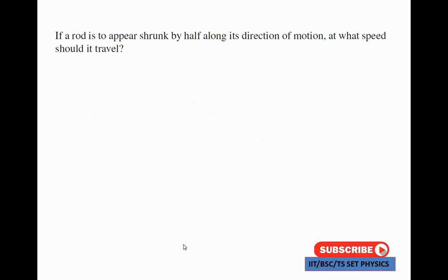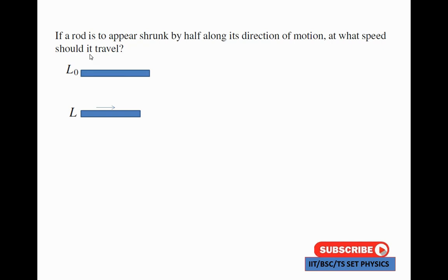The next important problem: if a rod is to appear shortened to half its length along its direction of motion, at what speed should it travel? The rest length is L-naught and the contracted length is L. The relation is L equal to L-naught divided by 2. The basic formula is L equal to L-naught over the square root of (1 minus v²/c²).